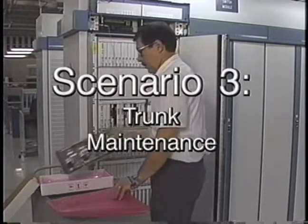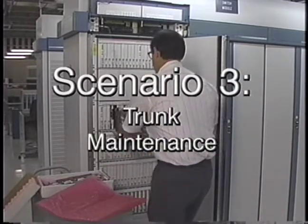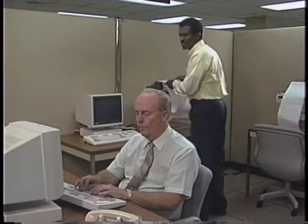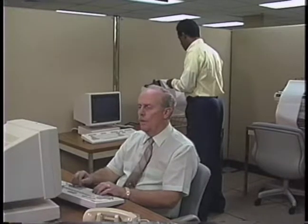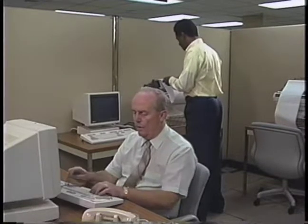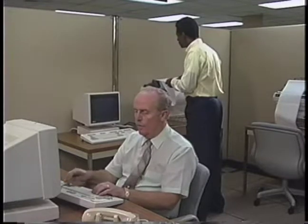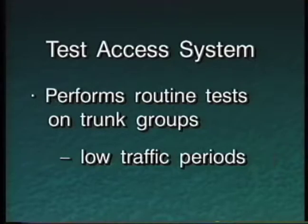Our final operations systems in action scenario deals with trunk maintenance and begins in a maintenance test center. A trunk access system reported a few troubles during the previous night. Computerized messages and trouble tickets came in response to an alarm given by the test access system, which was performing routine tests on the various trunk groups in the HGTN central office. The testing is performed during low traffic periods, usually after midnight. It appears that two trunks had transmission troubles.